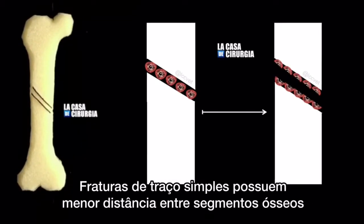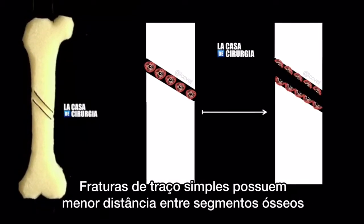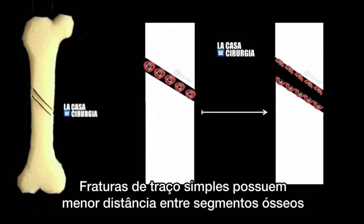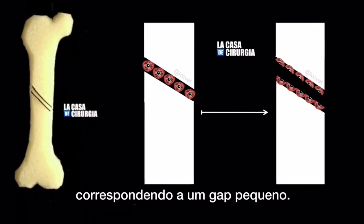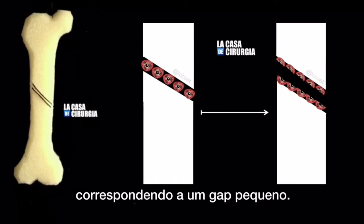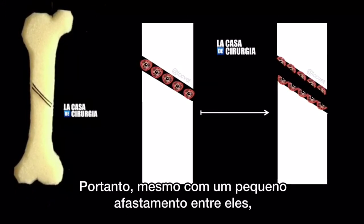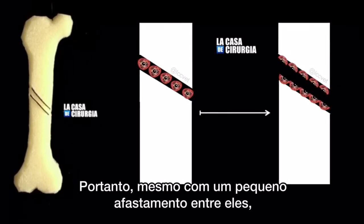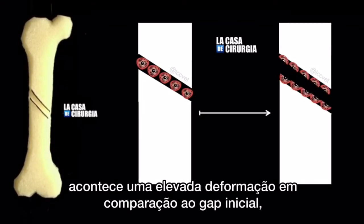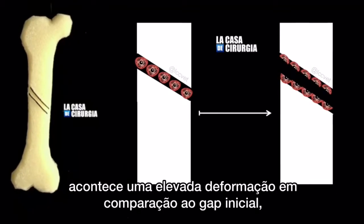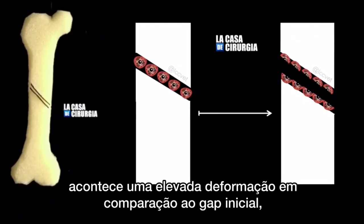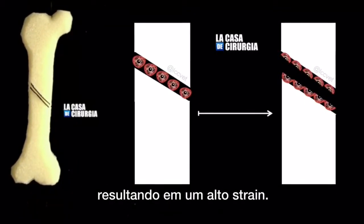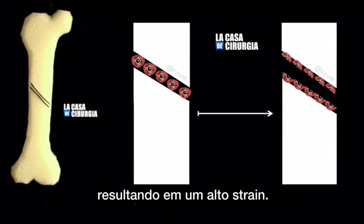Simple line fractures have a shorter distance between bone segments, corresponding to a small gap. Therefore, even with a small displacement between them, there is a high deformation compared to the initial gap, resulting in a high strain.